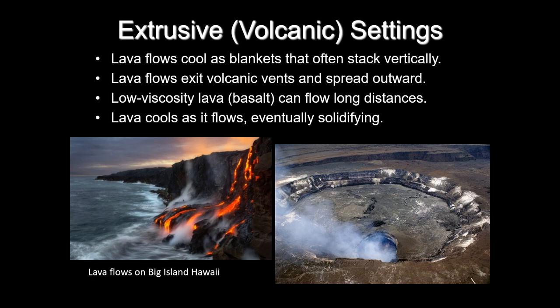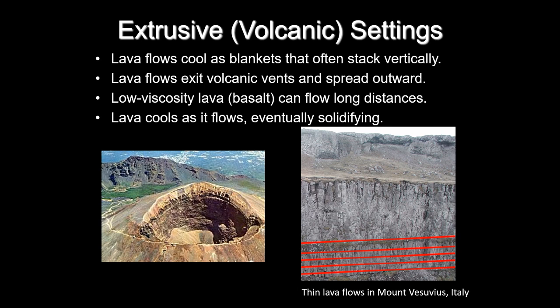Here are some examples of extrusive volcanic settings: lava flows on the Big Island of Hawaii that can travel tens of kilometers to the ocean, producing beautiful images of lavas pouring into the Pacific with steam rising. The image on the right is a picture of the crater at the top of Mount Vesuvius. We also see some ancient lava flows and craters — Vesuvius in Italy is the volcano that destroyed the ancient city of Pompeii, one of the first well-recorded large eruptions in the first century.